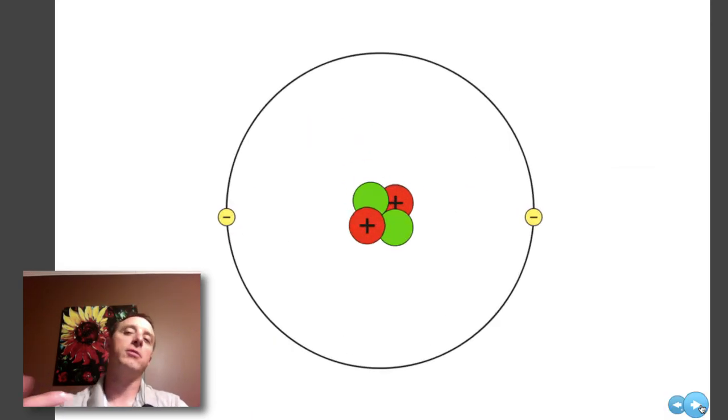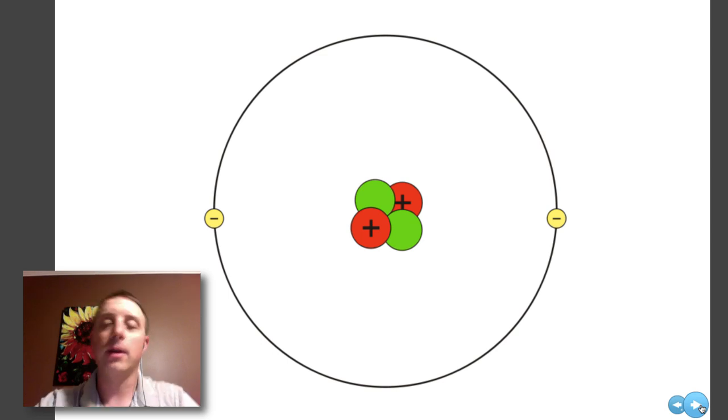The basic unit of chemistry which we'll be studying is the atom. This here is a very simple model of a very simple atom, a helium atom actually. In the center here is the nucleus of the atom, made up of two subatomic particles: the neutrons, which are green and have a neutral charge or no charge, and the protons, which are red and have a positive charge. Neutron N for neutral, proton P for positive. This is where most or almost all of the mass of the atom is found.